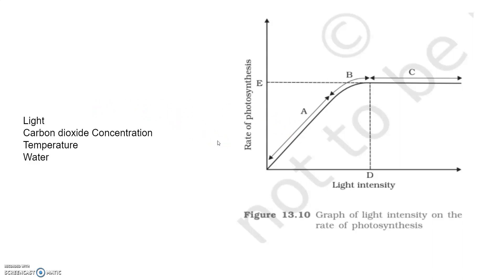When light intensity increases, the rate of photosynthesis also increases. When carbon dioxide concentration increases, the rate of photosynthesis also increases. Temperature does not directly influence the rate of photosynthesis, but at higher temperatures enzyme activity is inhibited due to denaturation of enzymes, which affects the dark reaction. Water: an increase in the amount of water does not increase the rate of photosynthesis, as after saturation no more water is required during photosynthesis.